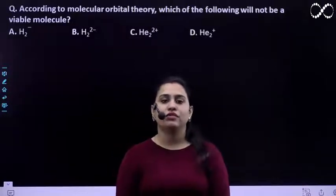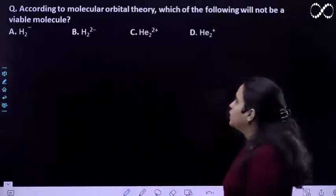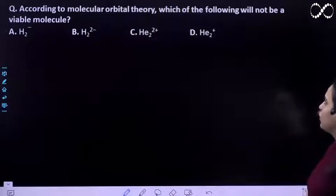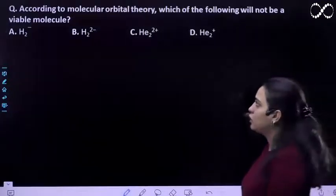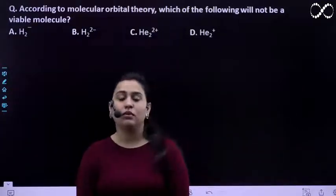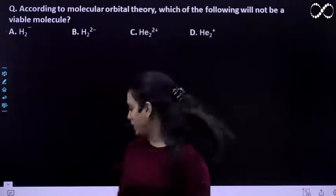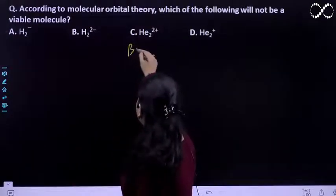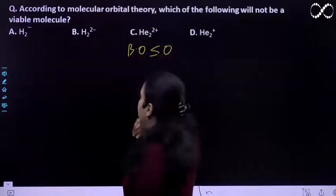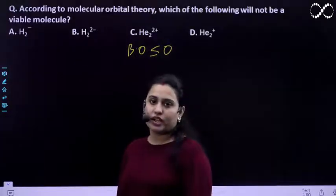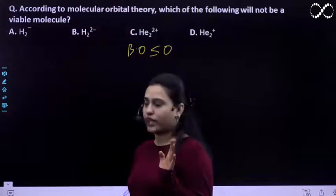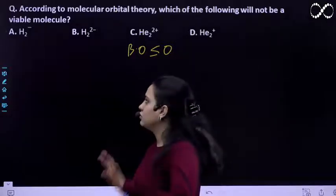Hello students, in this question we are asked according to molecular orbital theory which of the following will not be a viable molecule. Viable molecule matlab kaunsa is mein se possible nahin hooga. If the bond order is less than or equal to zero, the molecule will not be viable according to MOT. This is the law we have to learn.